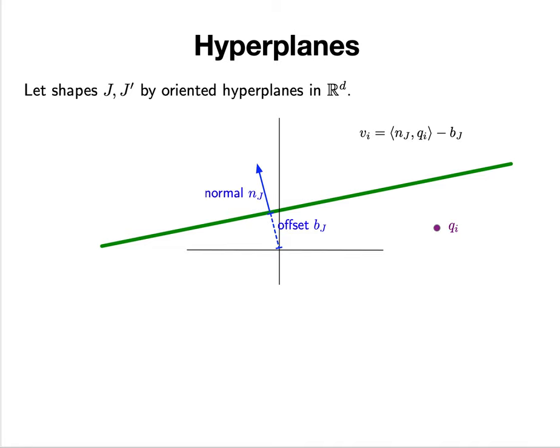It turns out I can encode a half-space, half-planes in d dimensions with a d+1 dimensional vector. It's basically a vector space over these.